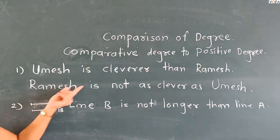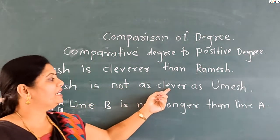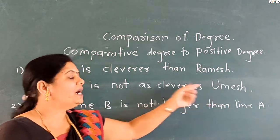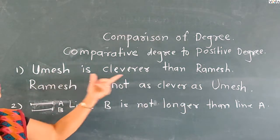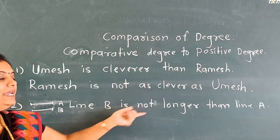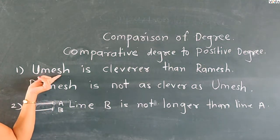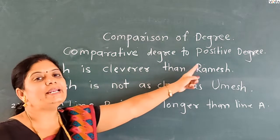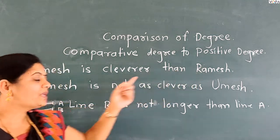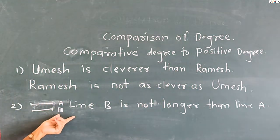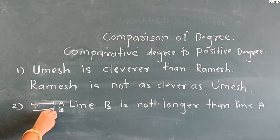The positive degree sentence is: Ramesh is not as clever as Umesh. Umesh is cleverer than Ramesh.